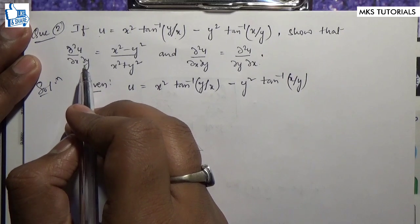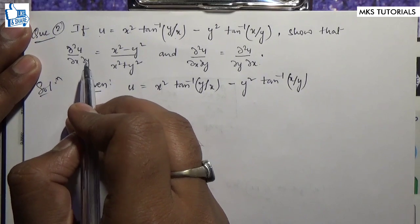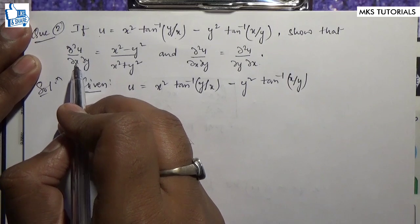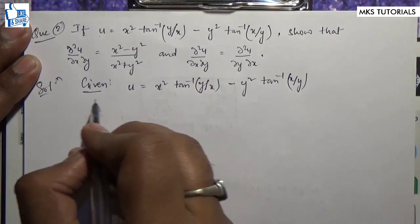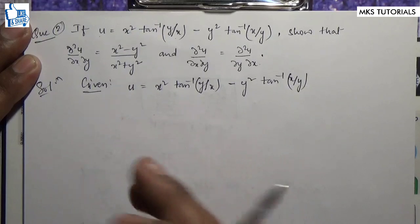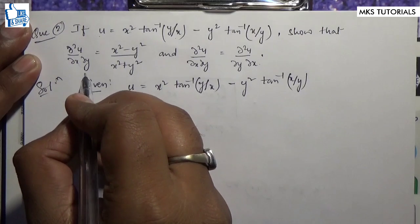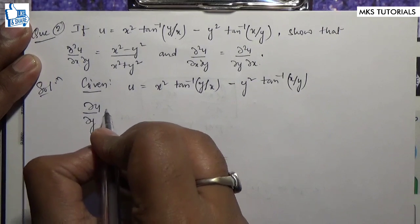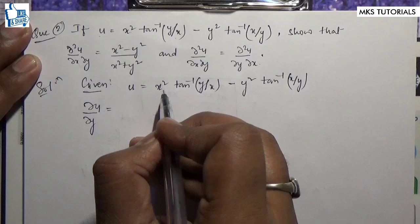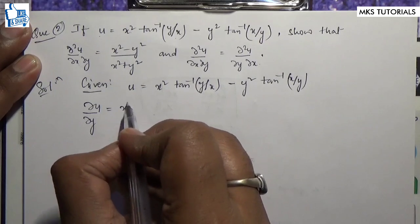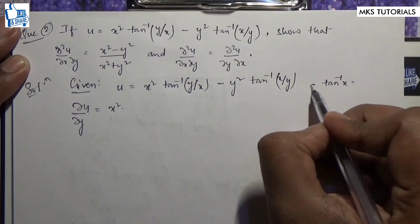∂²u/∂x∂y is equal to y, which I am going to show you. So the first thing I am going to do is differentiate with respect to y.